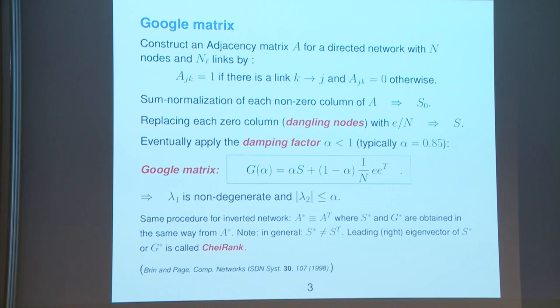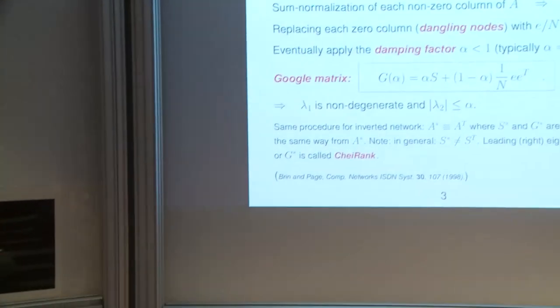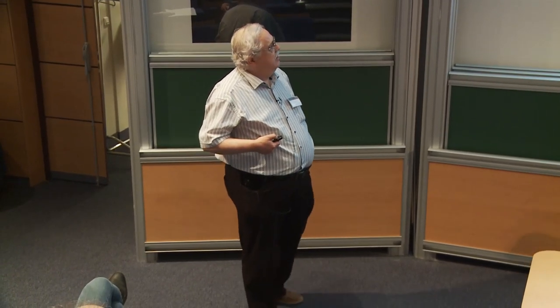However, there may be empty columns corresponding to what we call dangling nodes. In that case, we replace the full column by 1/n entries, where E is a vector of unit numbers. This matrix we call S, which already has the properties of a Perron-Frobenius operator. But at this stage, the unit eigenvalue may be degenerate — for university web networks, we may have degeneracy of 3,000 or more due to many invariant subspaces.